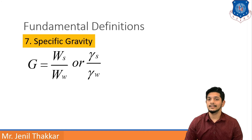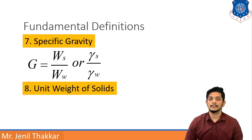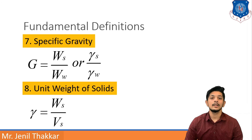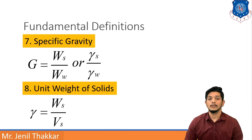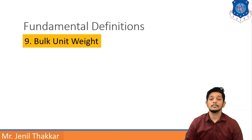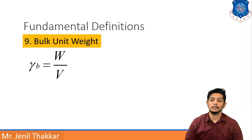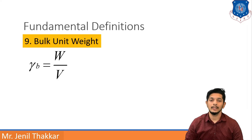The next definition is Unit Weight of Solids, denoted as gamma S. Gamma S equals Ws upon Vs — weight of solids upon volume of solids. Moving to the next definition, Bulk Unit Weight is denoted by gamma B. Gamma B equals capital W upon capital V, where capital W means total weight of total soil mass.